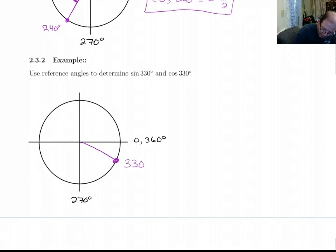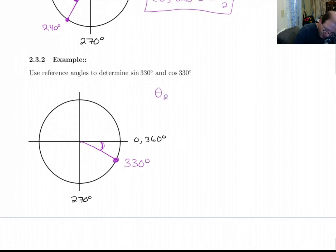So I'm going to draw my angle in here. 330 degrees. So my reference angle here is going to be the distance from 330 up to 360. Theta ref then is 30 degrees.